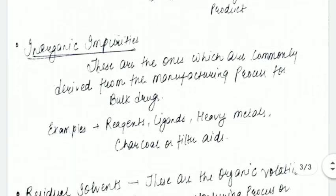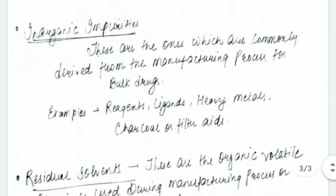Next, inorganic impurities. These are impurities that arise most commonly in bulk drug manufacturing. Some examples include reagents that are added, heavy metals, and charcoal.